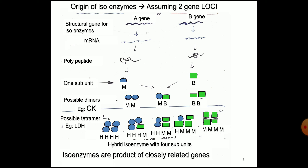Creatine kinase is a dimer — having two subunits. The various combinations are MM, MB, and BB, giving three isoenzymes of creatine kinase. Similarly, if the products of genes are H or M subunits, we can have combinations in a tetramer for LDH (lactate dehydrogenase): four H subunits give LDH1, 3H and 1M give LDH2, 2H and 2M give LDH3, 1H and 3M give LDH4, and all four M subunits give LDH5.